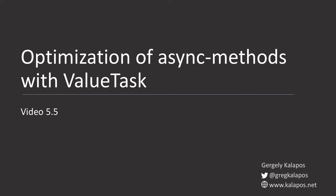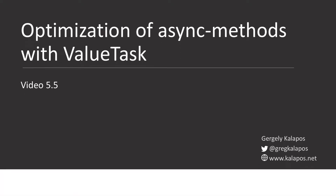Welcome to video 5.5: optimization of async methods with ValueTask. In the previous video we talked about tuples in C# 7, which is implemented with a value type, and the result of this is that it doesn't need the GC to free up the tuples once they are not needed. In this video we will learn about a similar optimization for async methods.